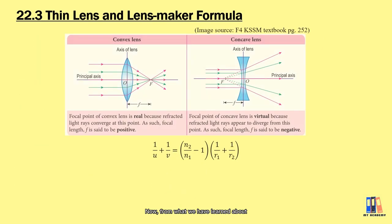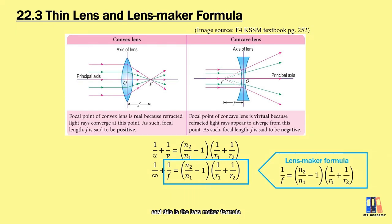Now, from what we have learned about the definition of focal point where all the parallel light rays will converge or seem to be diverged from. This is when the object is from infinity. The image distance is the focal length. Substitute this condition and we have 1 over f equal to n2 over n1 minus 1 multiply 1 over r1 plus 1 over r2. And this is the lens maker formula.